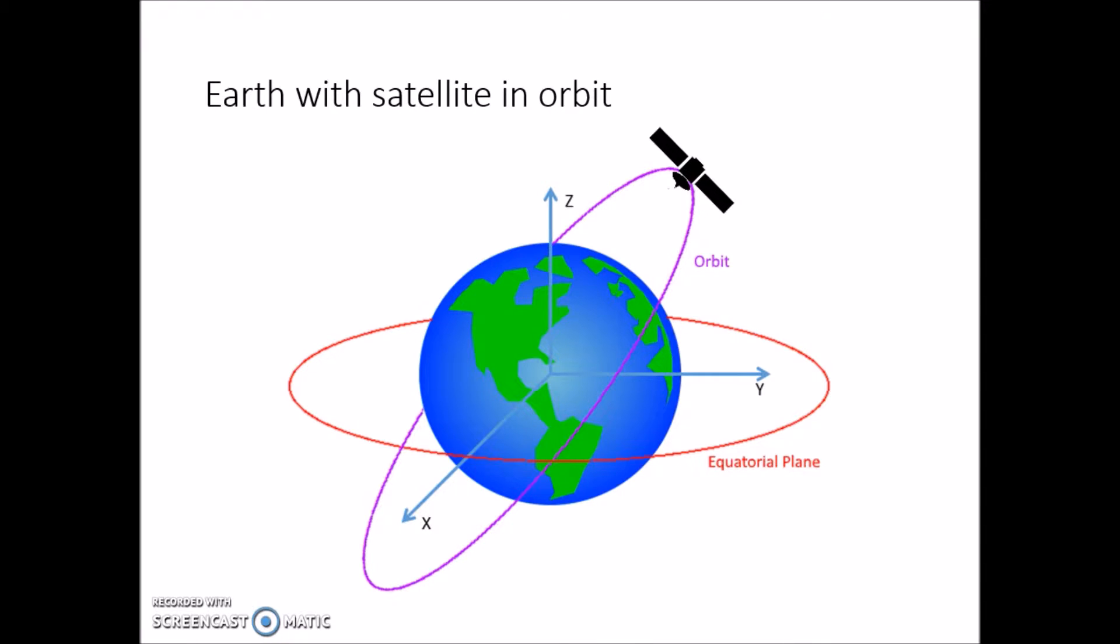We're talking about RAAN. As we mentioned before, RAAN stands for the right ascension of the ascending node. So first off, what is an ascending node? As seen in the diagram, the path of the orbit intersects the equatorial plane in two places, called orbital nodes.